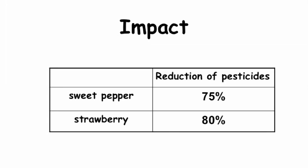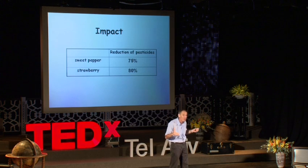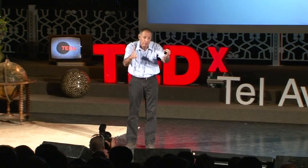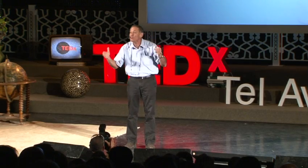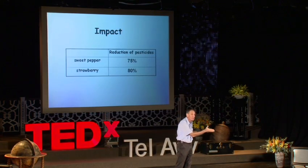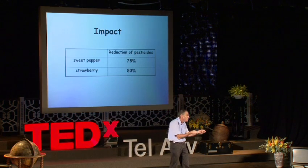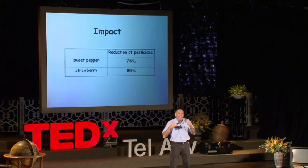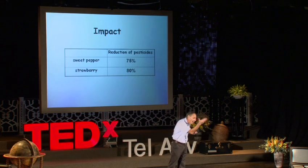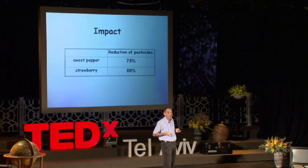In this table you can see the impact of successful biological control by good bugs. In Israel, where we employ more than 1,000 hectares — 10,000 dunams — of biological pest control in sweet pepper under protection, 75% of pesticides were reduced. In Israel's strawberries, even more: 80% of the pesticides, especially those aimed against pest mites. The impact is very strong.